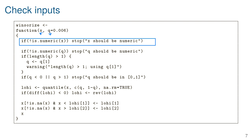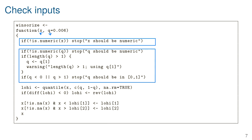A second set of checks covers the input Q: is Q numeric, is it a length-one object, and is it between zero and one? I've thoroughly checked the two inputs X and Q, and if X is not a vector or Q is outside the range zero to one, I issue warnings or error messages. You'll notice that more than half of the code in this function is devoted to these initial checks — but they will prevent a lot of problems.